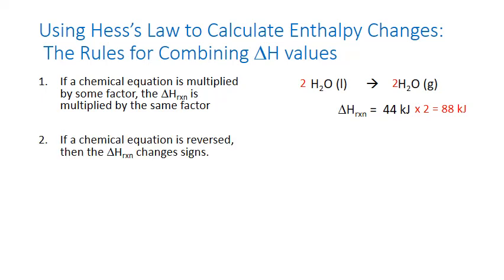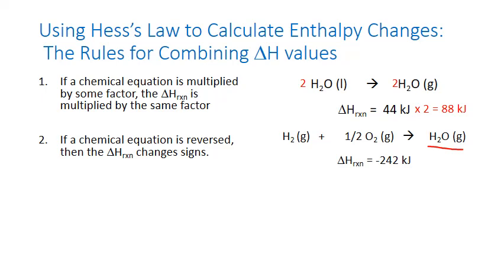The second type of manipulation we might have to do is reverse an equation to get it to add together the way we want. If a chemical equation is reversed, then the sign on the enthalpy is simply reversed. For example, this is the standard equation for the formation of gaseous water from its constituent elements, and the standard enthalpy of formation for that is negative 242 kilojoules per mole of gaseous water.